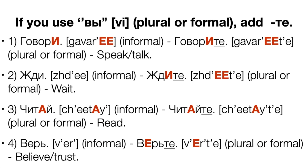If you address a person using the pronoun вы — plural or formal — then the ending ТЕ is added to the singular imperative form of a verb. For example: (1) говори (informal) → говорите (plural/formal), meaning speak or talk. (2) жди → ждите, meaning wait. (3) читай → читайте, meaning read. (4) верь → верьте, meaning believe or trust.